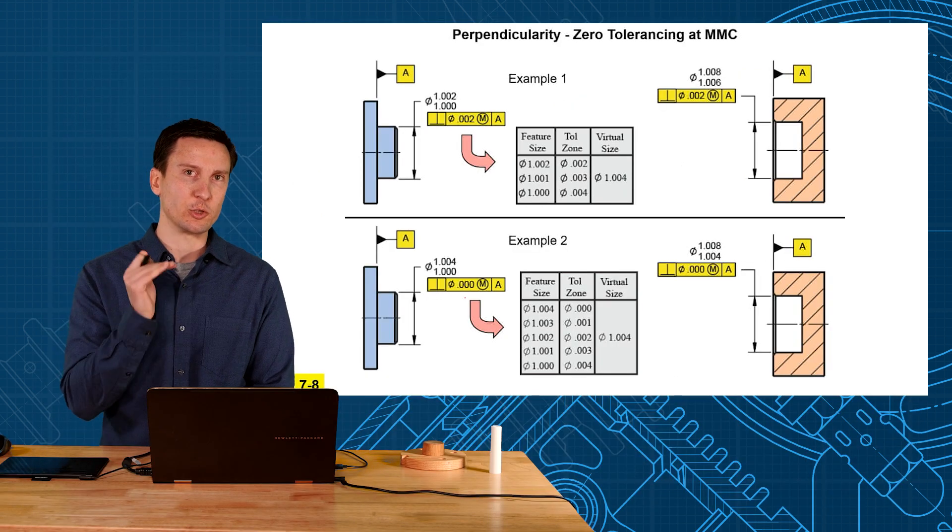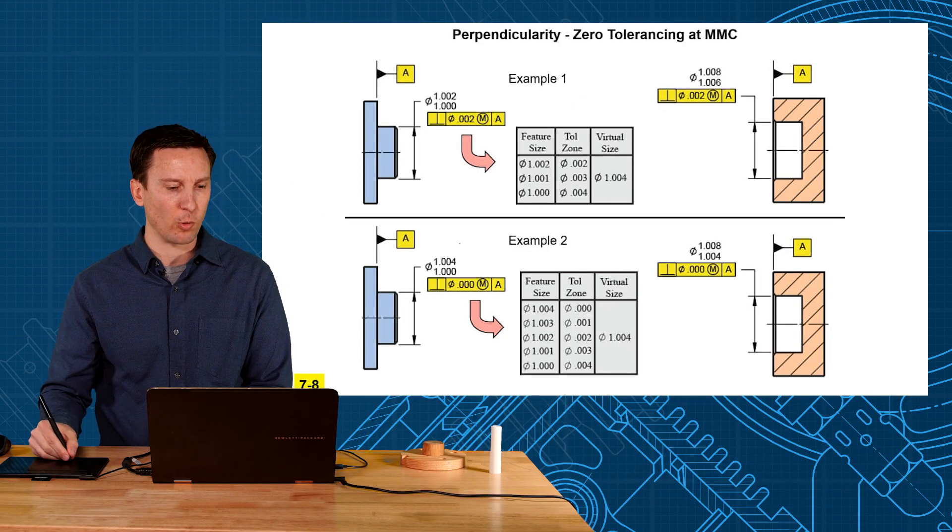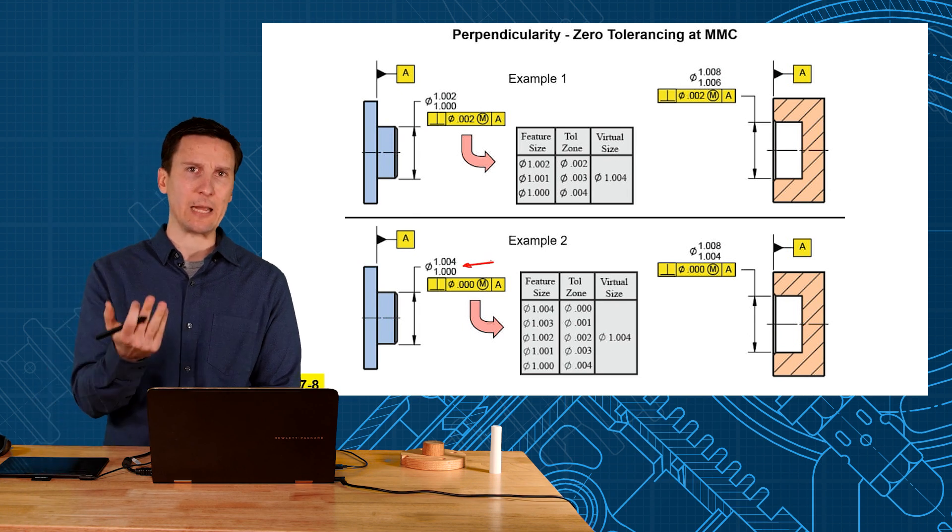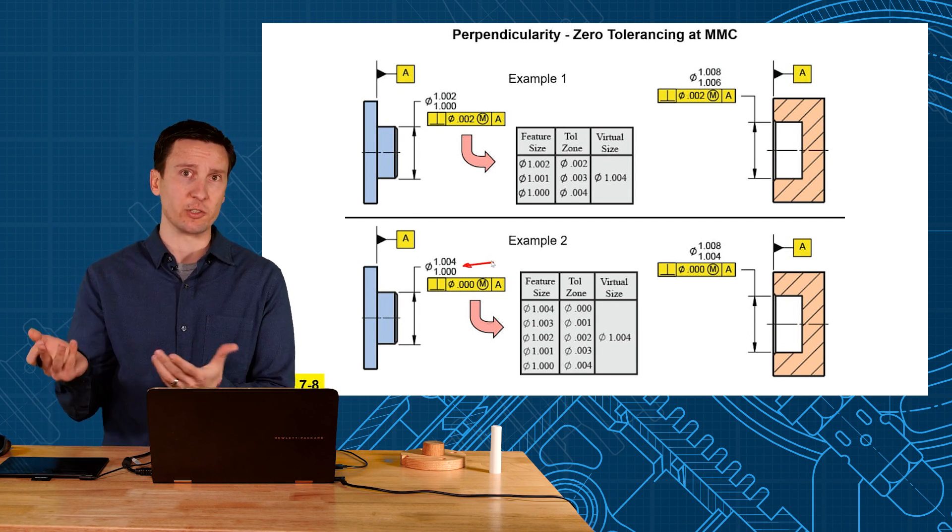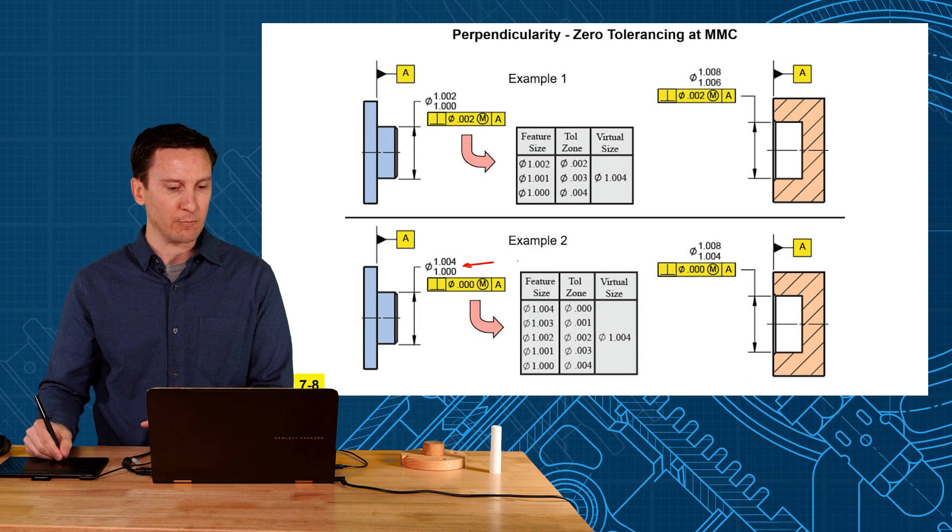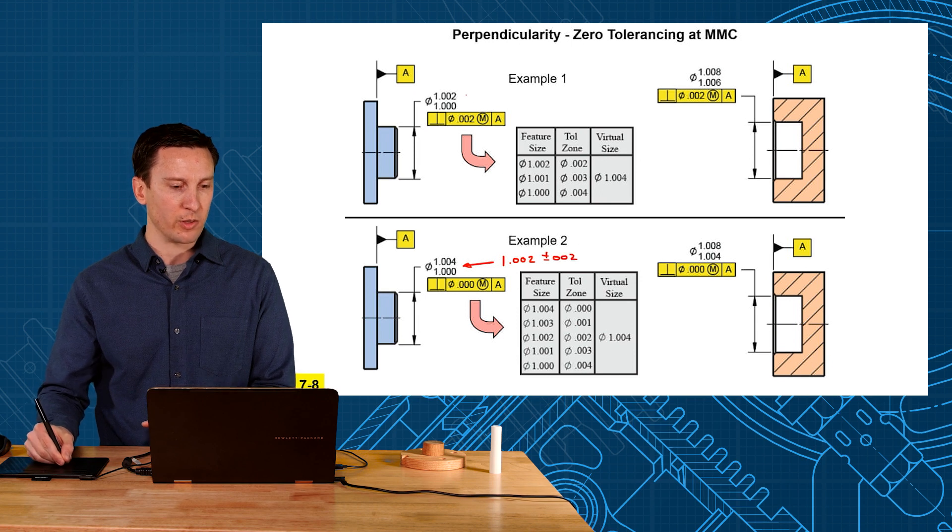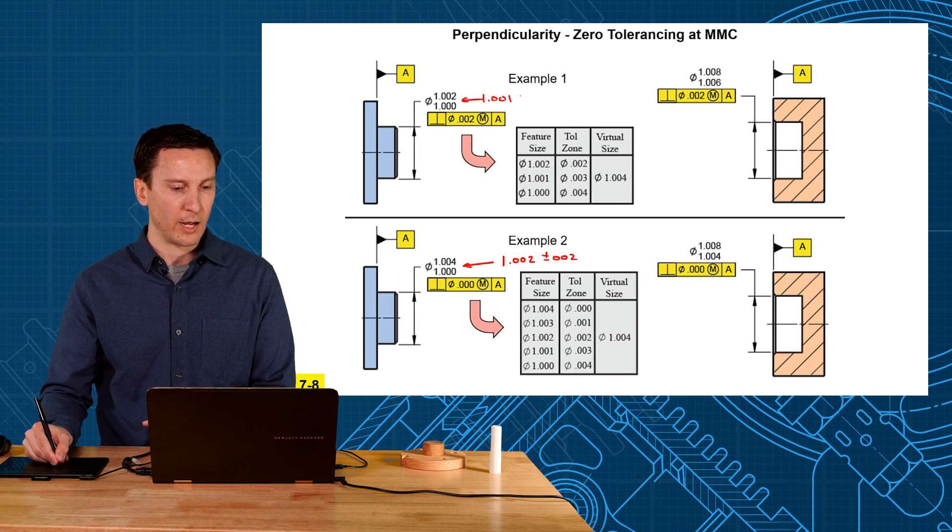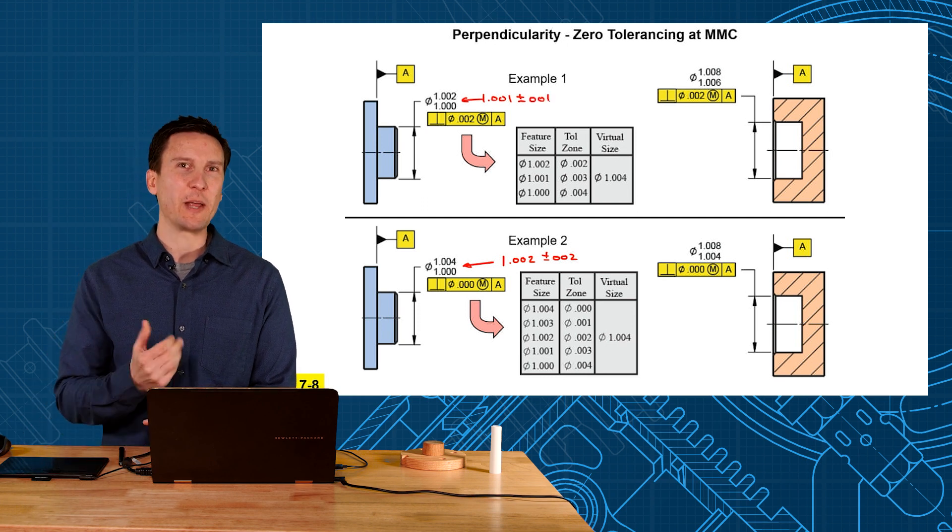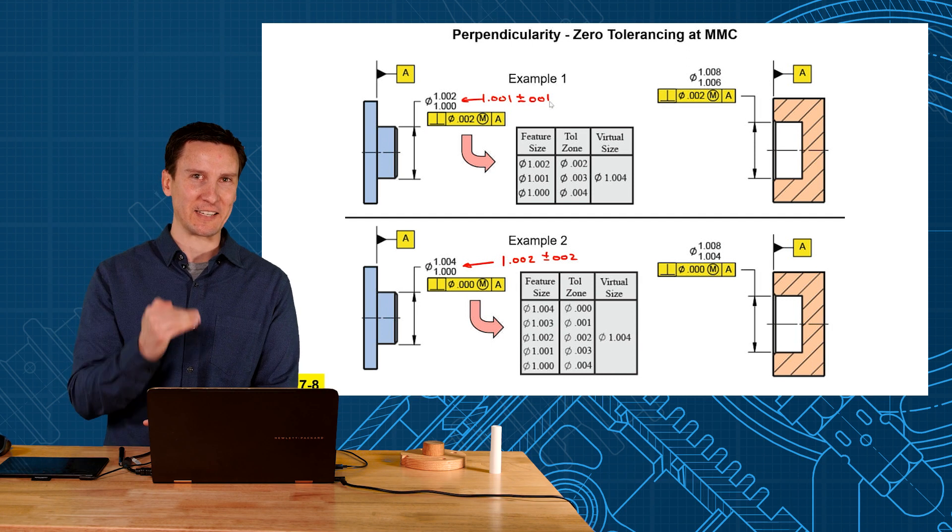If manufacturing was going to shoot for a number, what would they shoot for on example number two? Because you try to aim for a size, right? You want to plug into your CNC machine. So what would you aim for? Probably the middle number, one inch two thou, and you would get a size tolerance of plus or minus two. Where this one, you would aim for one inch one, and only give you plus or minus one. So which one would manufacturing rather build? The second example.